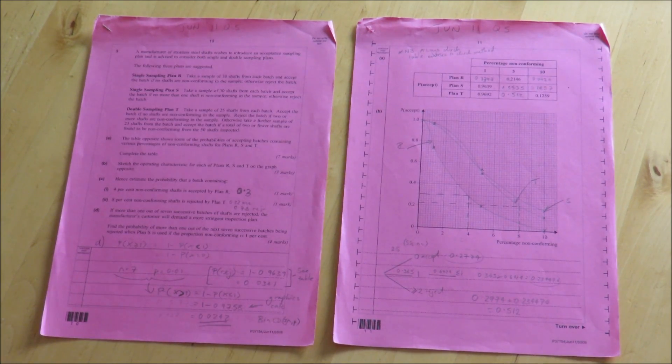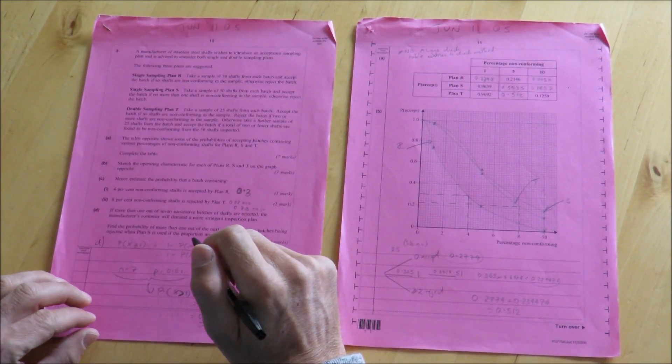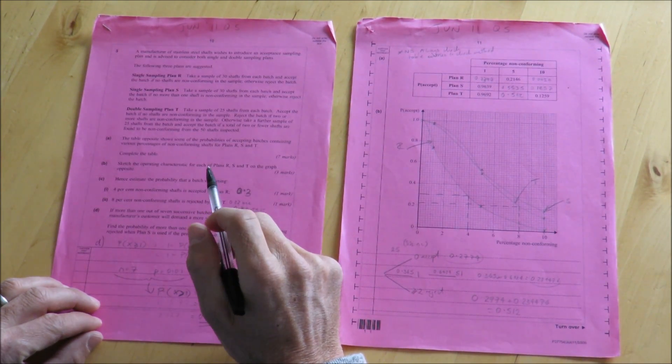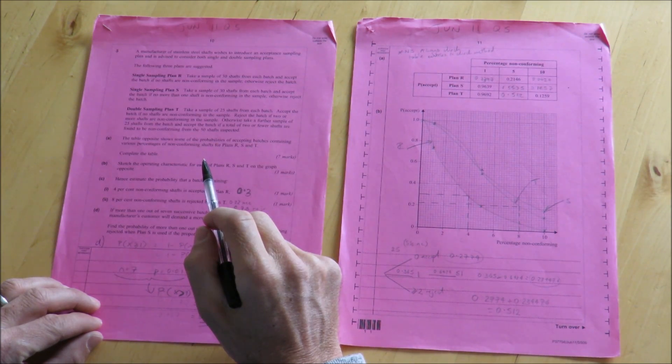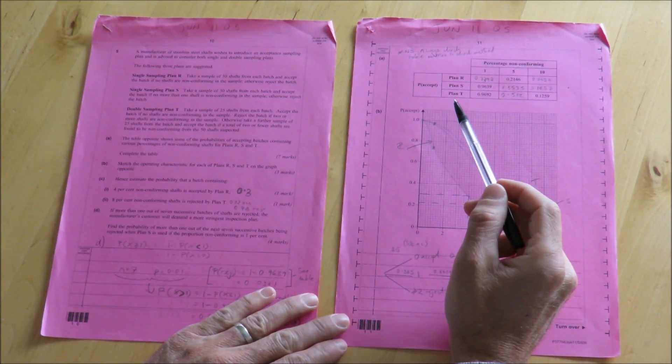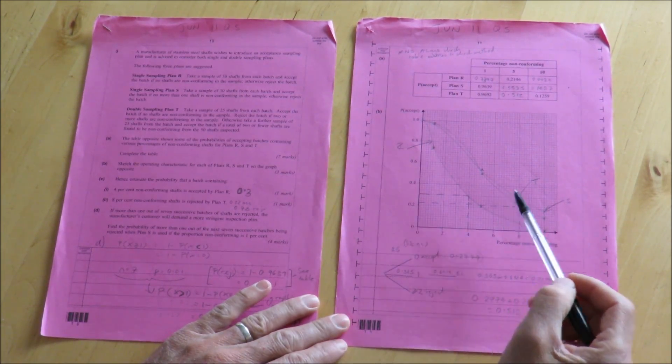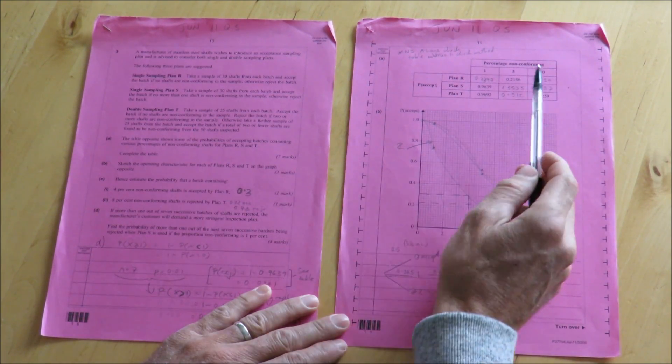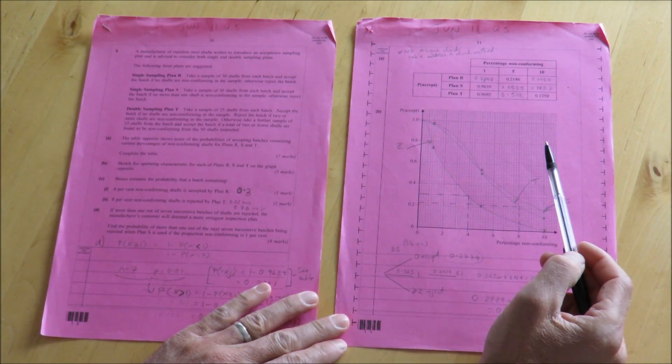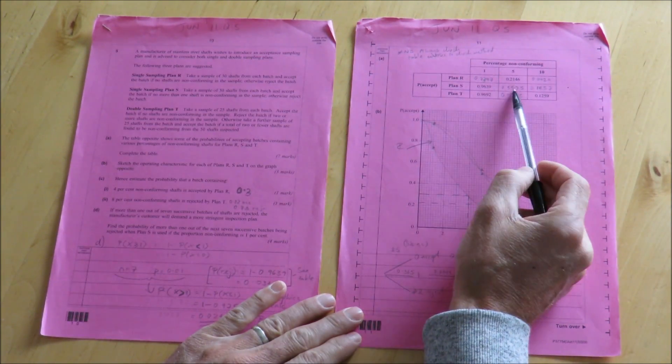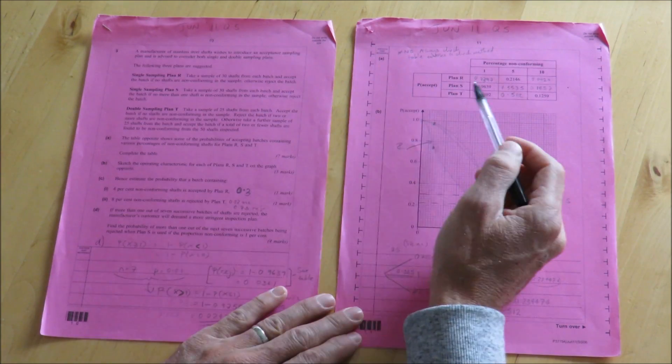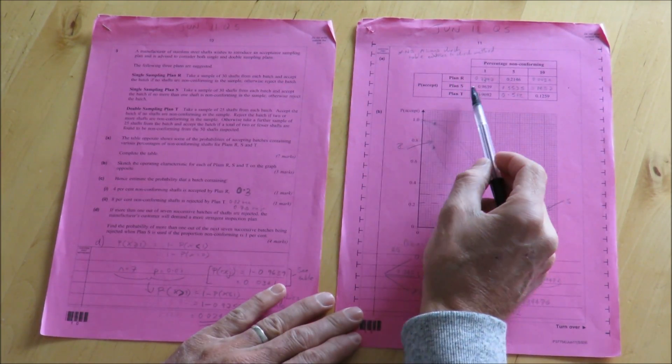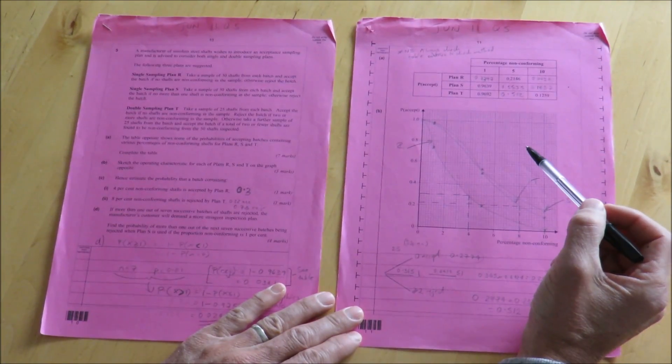This is June 11 question 5 from an SS06 paper and it's an acceptance sampling plan question. We're asked to draw the operating characteristics for three plans, R, S and T, on completion of a table of values. The table I've completed now, but obviously for the question, seven marks are available for the completion of the table.